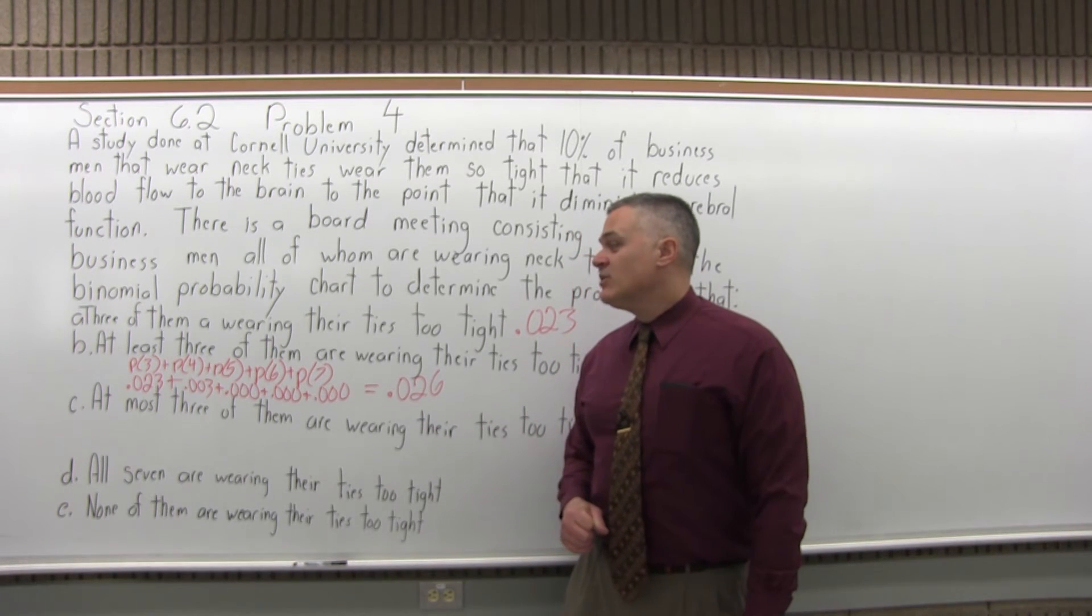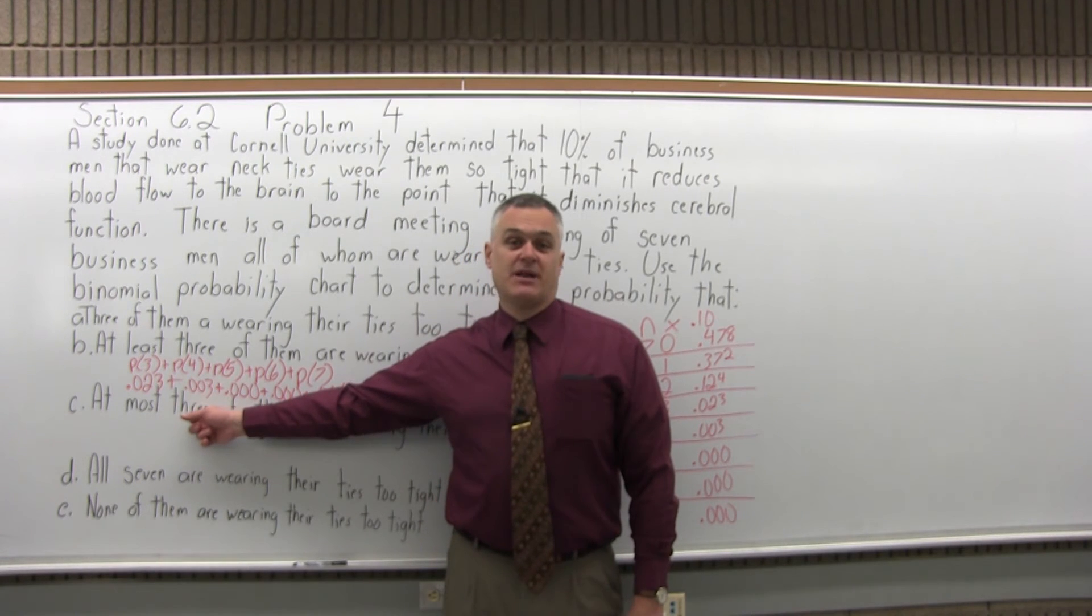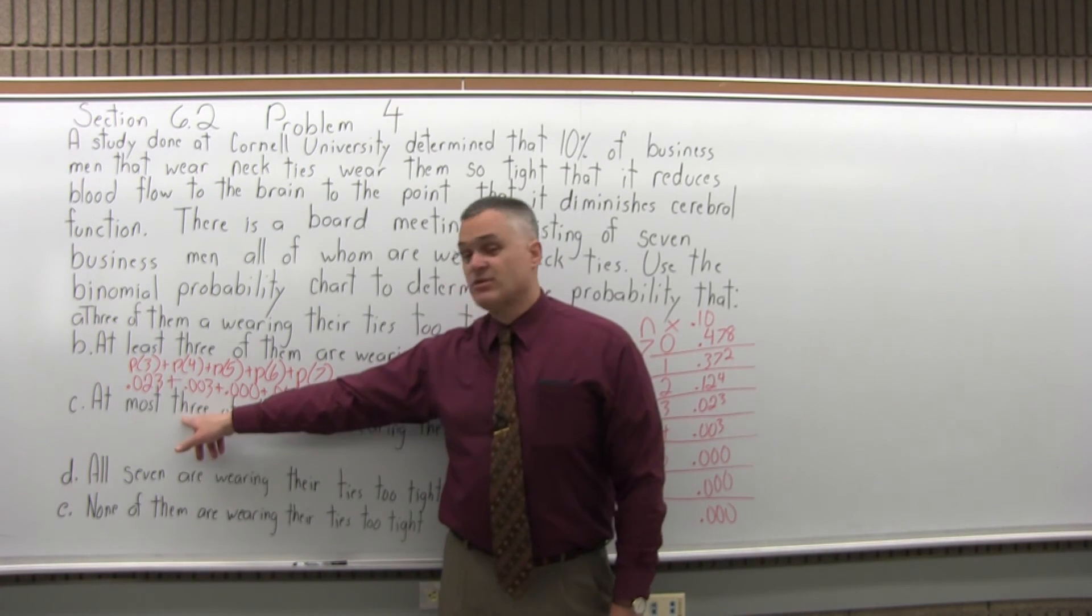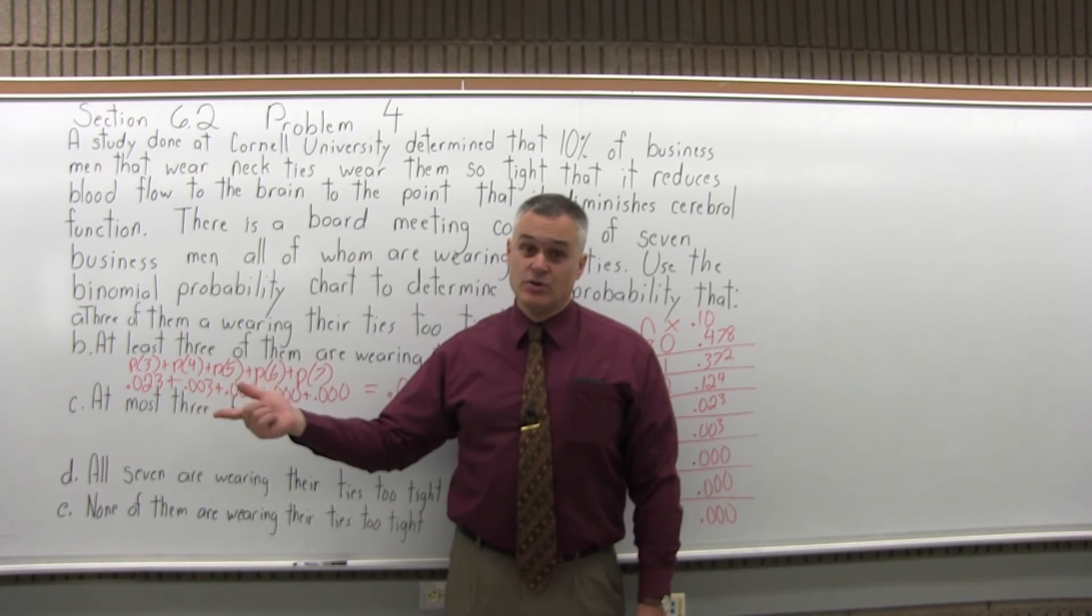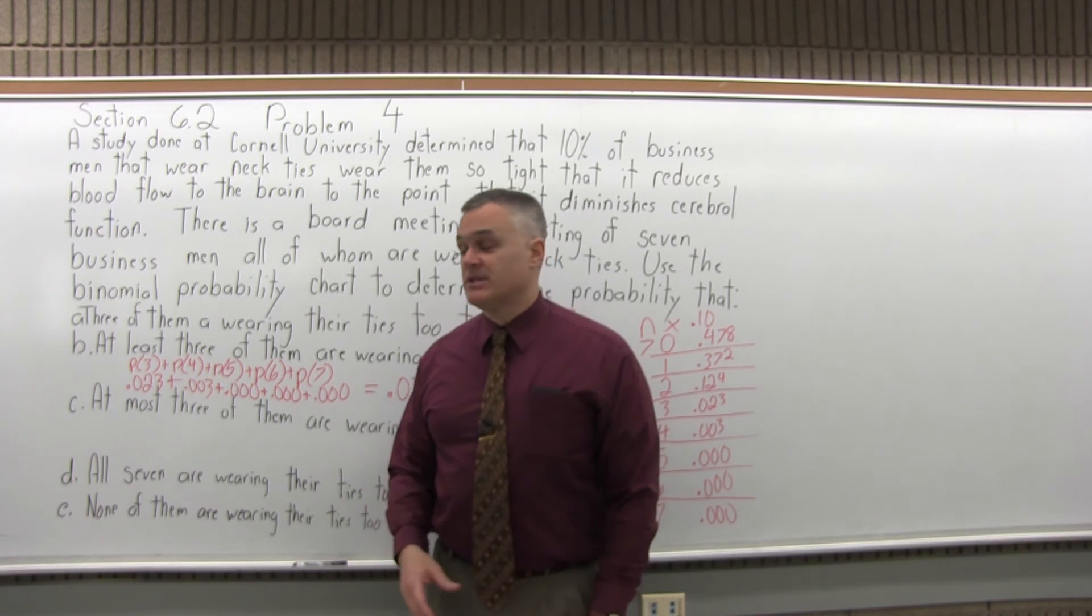Now C, what's the probability that at most three of the businessmen have their neckties on too tight? It sounds so similar, but it's kind of a different process. At most three means three is the most. We're going to have to find the answer for three, for two, for one, and for zero. Don't forget zero and add those probabilities together.